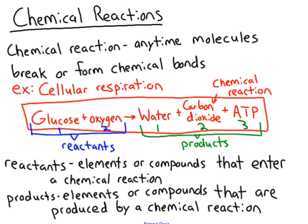The second thing you need to know is that every chemical reaction has reactants and products. Reactants are things that go into a chemical reaction — they go to the left of the arrow. In cellular respiration, the two reactants are glucose and oxygen. Products are the elements or compounds produced by a chemical reaction. In this example, the three products are water, carbon dioxide, and ATP — they are to the right of the arrow.